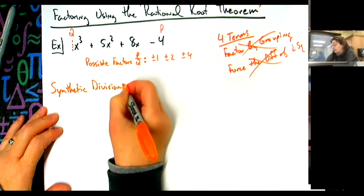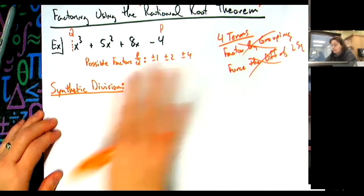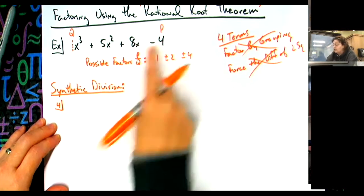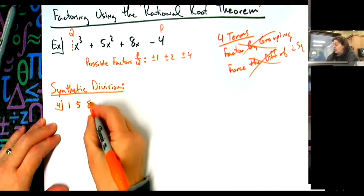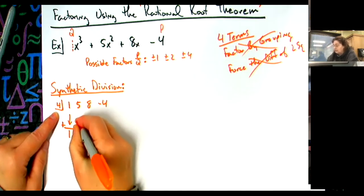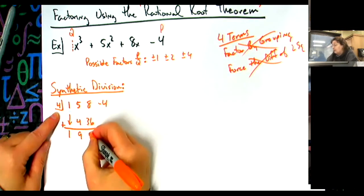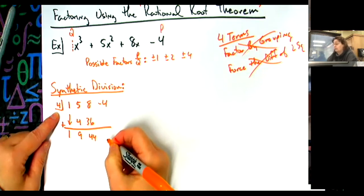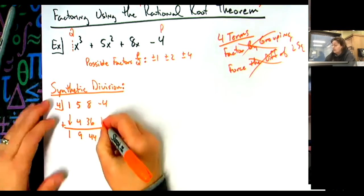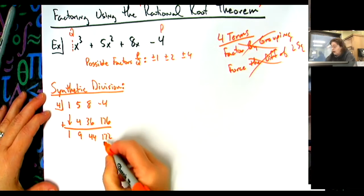Let's try four. I'm randomly picking one of those numbers and I'll take all my coefficients: one, five, eight, negative four. Synthetic division — one comes straight down. One times four is four; four plus five is nine; nine times four is 36; 36 plus eight is 44; 44 times four is 176; 176 plus negative four gives 172. I did not get a zero.